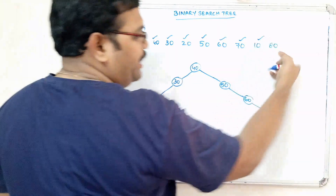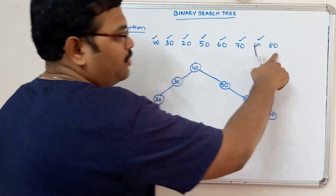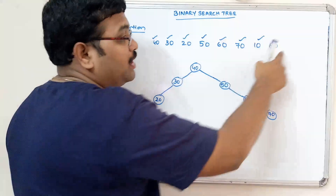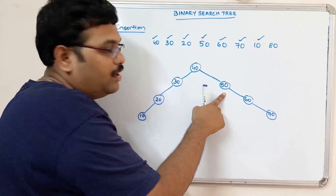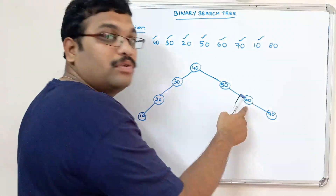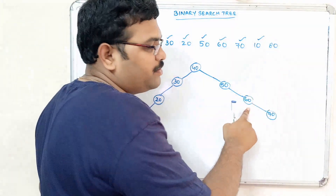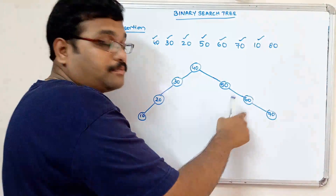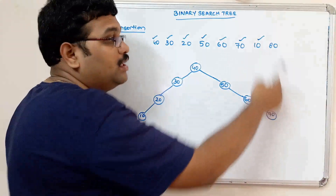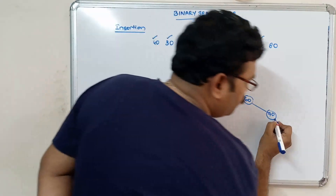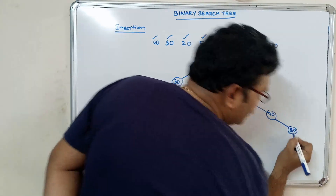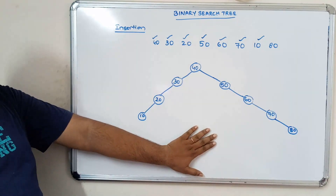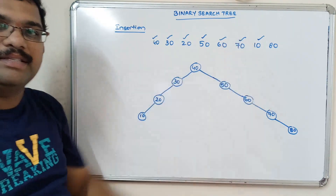Next, 80. 80 is compared with 40 — greater. It moves to 50 — greater. Again it moves to 60 — 80 is greater than 60. So 80 is inserted to the right of 70 in the right subtree. This is the binary search tree for the given elements.